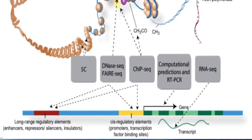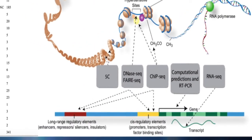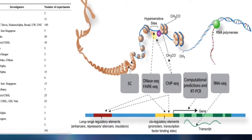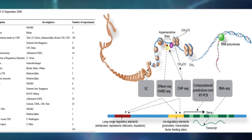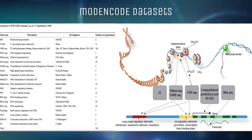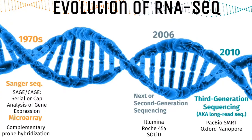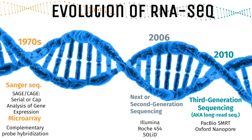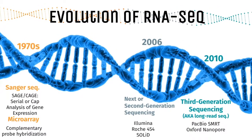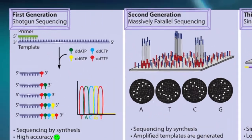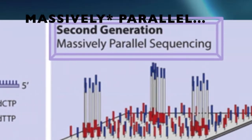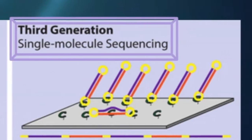First, we'll need to have the genomic DNA assembly that we'll be aligning the reads to. By sequencing the genomic DNA, we get a full picture of the genome regardless of where or how it's expressed. This can be done using a variety of methods which fall under first, second (also known as next), or third generation sequencing — also known as shotgun, massively parallel, and single molecule sequencing respectively.